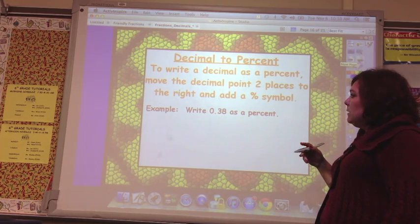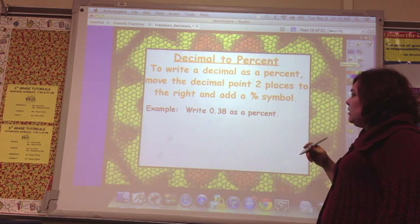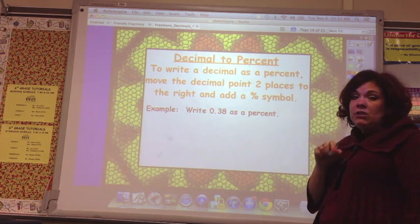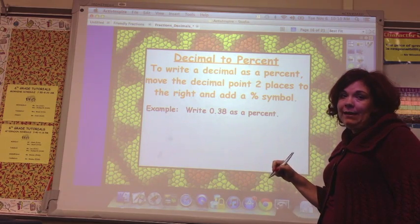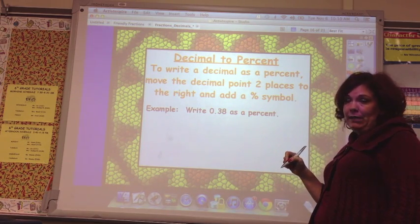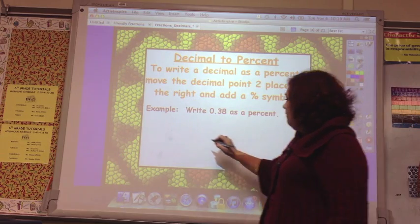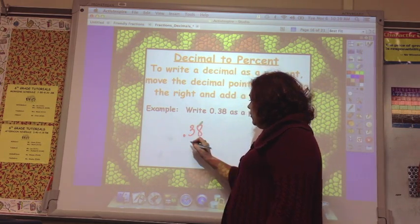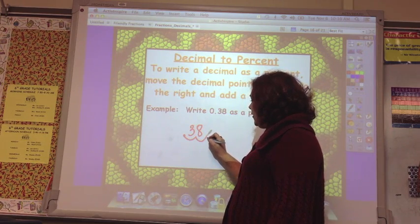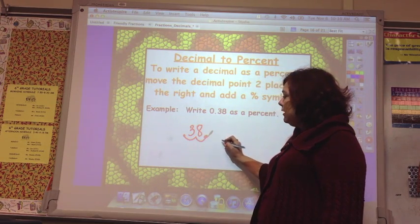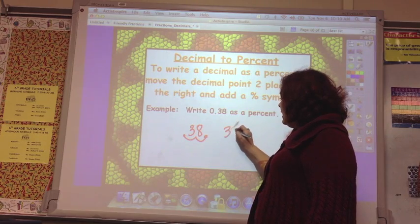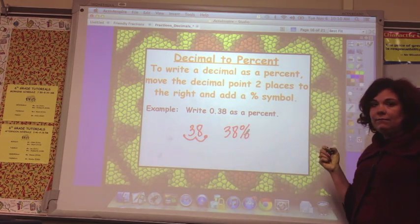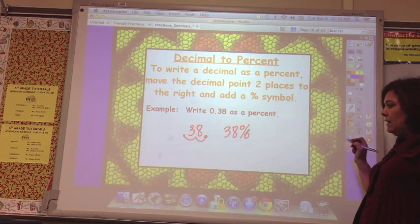To write a decimal as a percent, move the decimal point two places to the right and add the percent sign. And we call this Dr. Pepper. Decimal point. And so if we've got 38 hundredths, we go Dr. Pepper, move the decimal point two places to the right, and add a percent sign. It's that easy. So Dr. Pepper, add a percent sign.